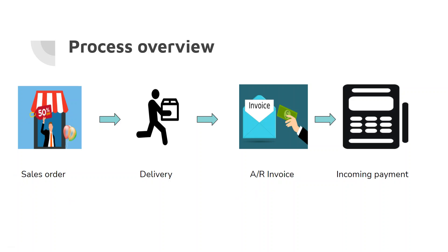The first document is the Sales Order, which shows the commitment from a customer or lead to buy an agreed quantity and price of a product or service from you. The second document is the Delivery, which indicates that the shipment has arrived to your customer. The third document is the AR Invoice.